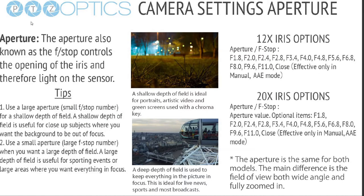Aperture is also known as f-stop control — it's basically the opening of the iris, controlling the light that hits the sensor. Using a large aperture, which is a small f-stop, allows you to have a shallow depth of field, useful for close-up objects where you want the background out of focus. That's called bokeh, and it's great for interviews and live streams. It's also a nice trick for green screen since you can blur that background to get an even color. A small aperture, which is a large f-stop, gives you a larger depth of field — great for sporting events or large areas where you want everything in focus.